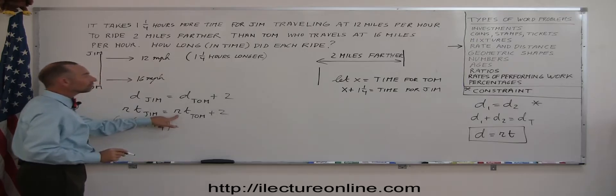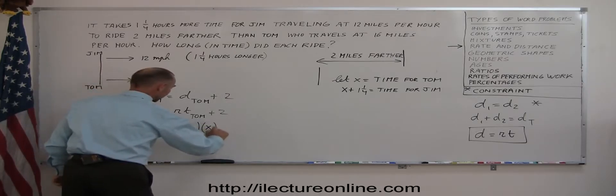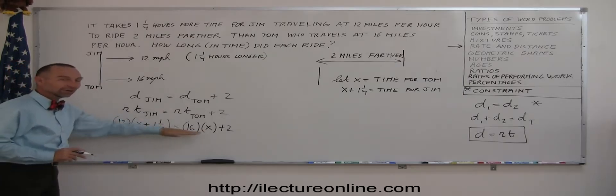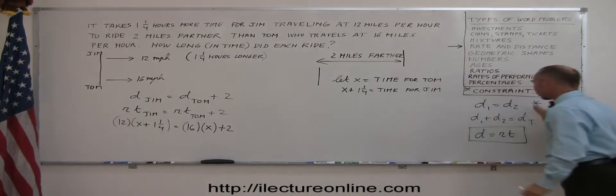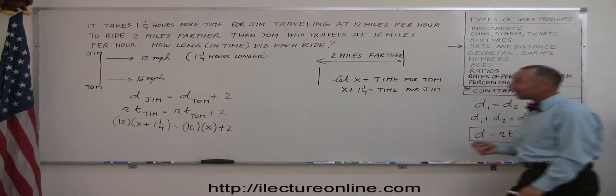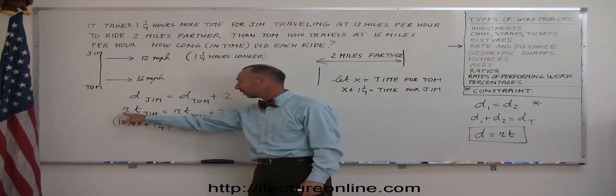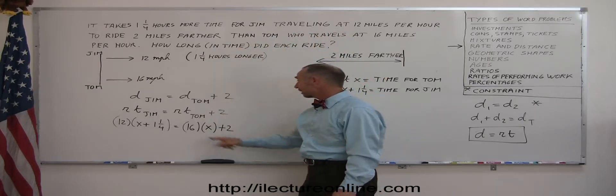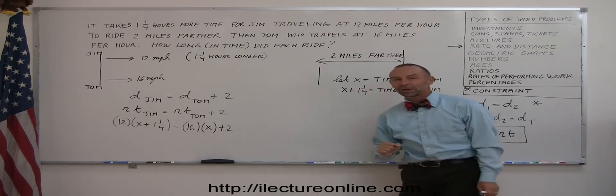Okay, I think now we're ready to make this into an equation. So the distance for Jim would be the rate for Jim times the time for Jim. So where is Jim? Jim is right there. Travels 12 miles per hour. There's a rate. And the time for Jim is x plus one and a quarter. So rate times time for Jim equals rate times time for Tom plus two. The rate for Jim, 12 miles per hour. The time for Jim, x plus one and a quarter equals the rate for Tom. Tom travels at 16 miles per hour. The time for Tom is x plus two. Wow, we did it.